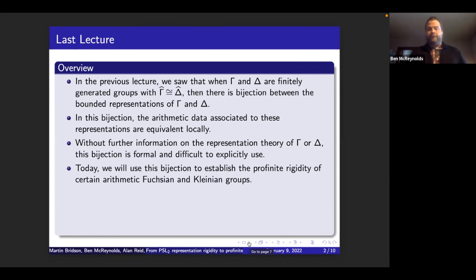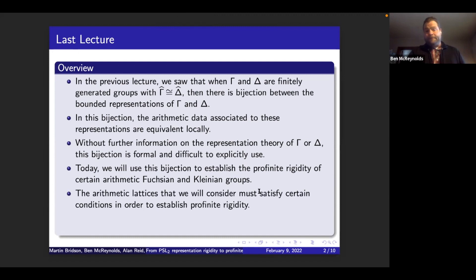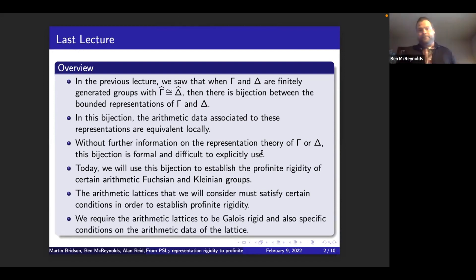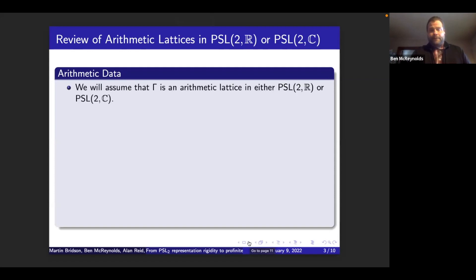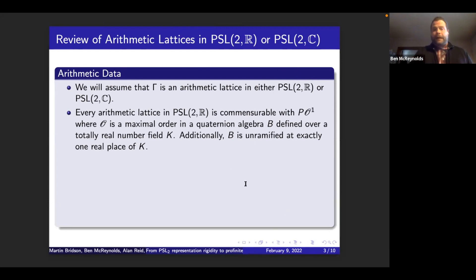Today we're going to discuss this for certain kinds of arithmetic Fuchsian and Kleinian groups. The arithmetic condition is really needed, but also more than just arithmeticity — we're going to need them to satisfy some list of conditions. We'll require that these lattices be Galois rigid, plus additional conditions on their arithmetic data. Every arithmetic lattice in PSL2(R) is commensurable with the group of norm-one elements of some maximal order inside some quaternion algebra defined over a totally real number field.